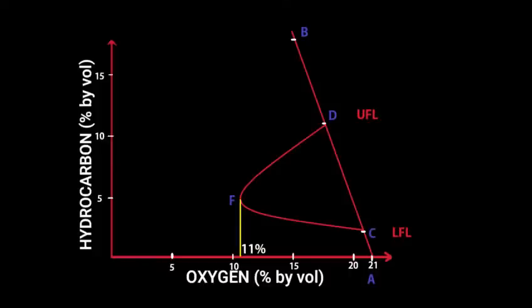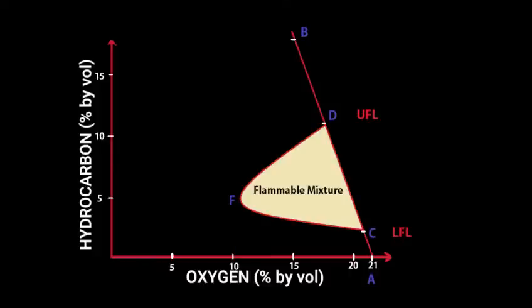At point F, the oxygen level is 11% by volume. The area under the curve indicates the flammable mixture. Now, our tank has a mixture of air, hydrocarbon, and inert gas. This is indicated on the graph at point E.